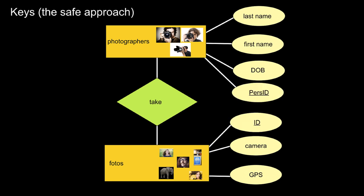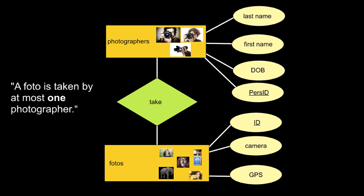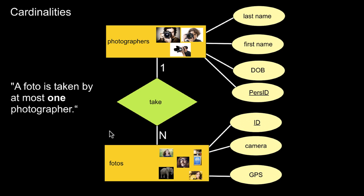Currently there's no restriction on how photographers take photos, and that's what I want to model next. Assume we want to express that a photo is taken by at most one photographer. This can be done by adding so-called cardinalities. There are various ways of doing that; what I use in this video is the Chen notation — one of the earliest proposals and relatively simple. You'll find many different approaches on the internet, but I think this one is easiest to learn.